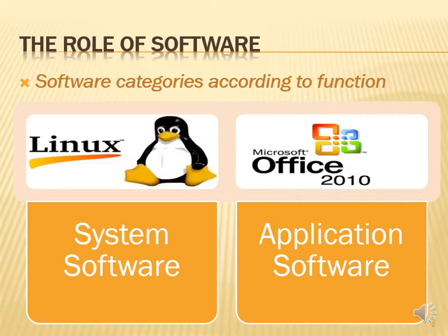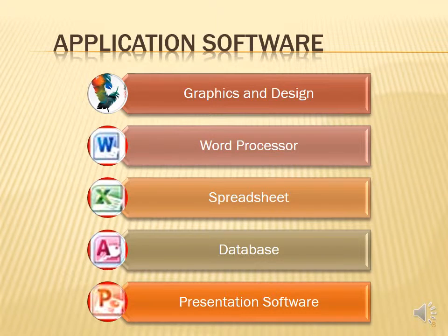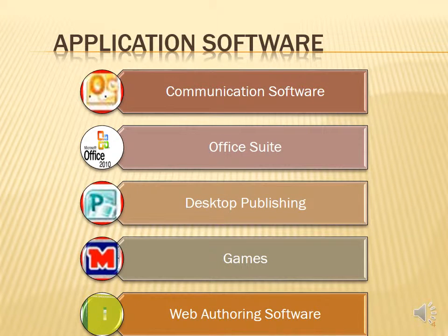Application software includes programs like Microsoft Office — word processing, spreadsheets, etc. — and these are programs that you personally use on the computer. For example, we have graphic and design software which includes programs like Photoshop, CorelDRAW, and AutoCAD. We also have word processor programs like Microsoft Word, spreadsheet software like Microsoft Excel, and database software like Microsoft Access.